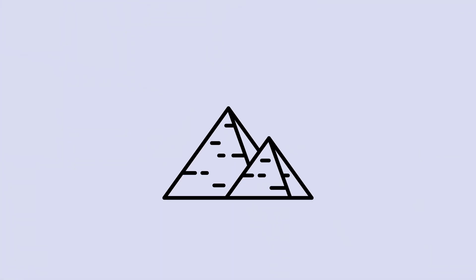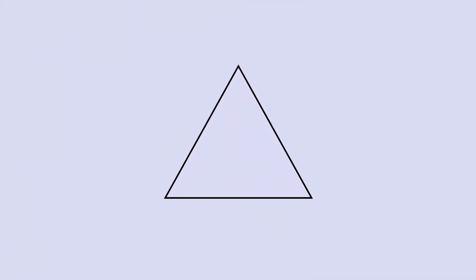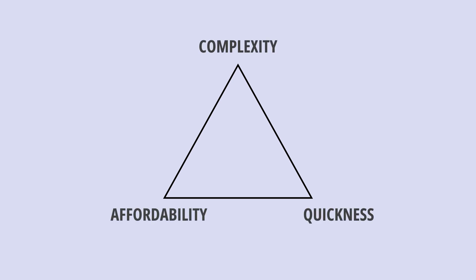Perhaps inspired by the pyramids, 1950s project management started using the Iron Triangle to model project constraints. You can only choose two from project complexity, affordability, and quickness.